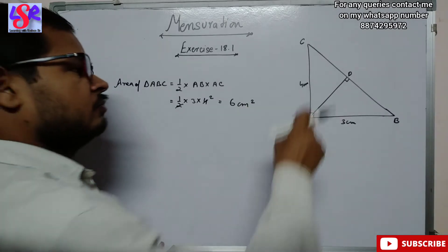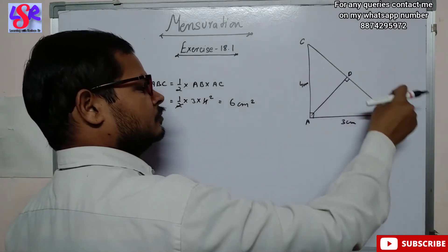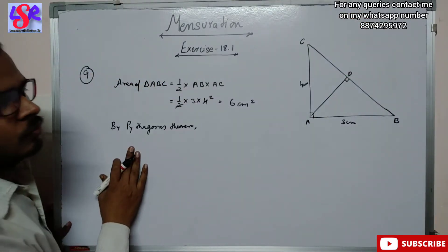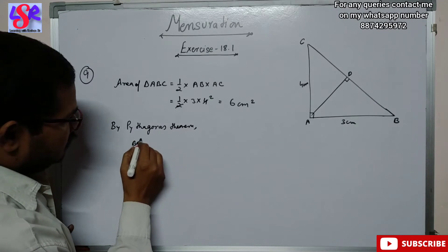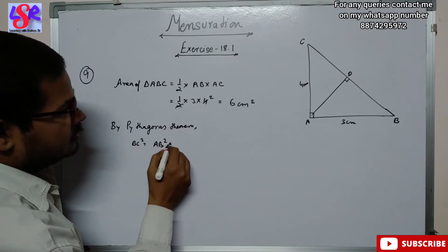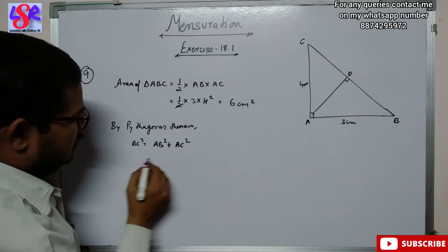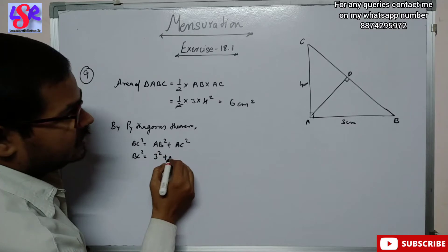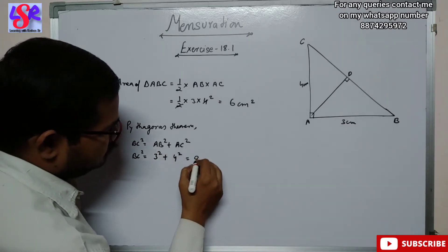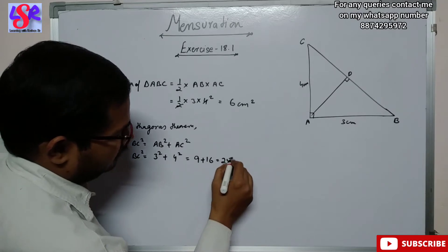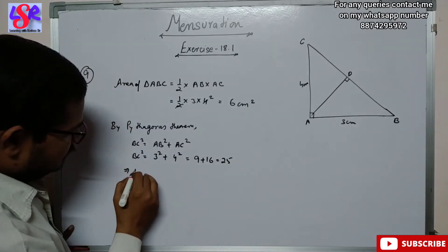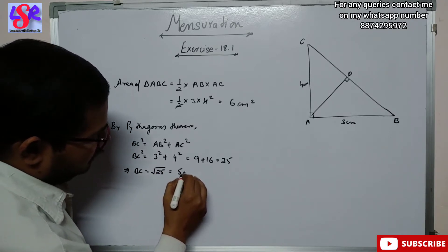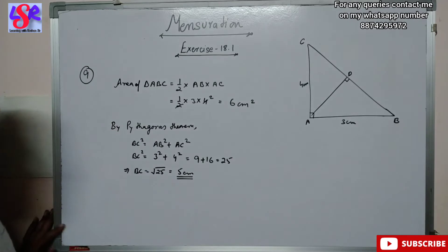Next we have to find side BC. We can use the Pythagoras theorem. By Pythagoras theorem, BC squared equals AB squared plus AC squared, so BC squared equals 3 squared plus 4 squared, which is 9 plus 16, equals 25. Therefore BC equals the square root of 25, which is 5 centimeter.